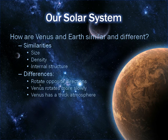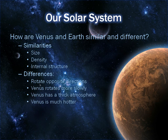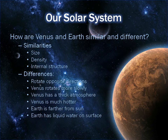Venus has a very thick atmosphere that is very acidic and can destroy anything that goes through it. It also has a runaway greenhouse effect, so it's much hotter. It's also closer to the sun, whereas Earth is the farther planet. Earth has liquid water on its surface. So there are several important similarities and differences between these two planets.